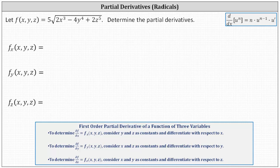Given f of x, y, z, determine the partial derivatives: the partial of f with respect to x, the partial of f with respect to y, and the partial of f with respect to z. To begin, we need to write the square root using the rational exponent of 1/2. This indicates f(x, y, z) is equal to five times the quantity 2x cubed minus 4y to the fourth plus 2z to the fifth, raised to the power of positive 1/2.